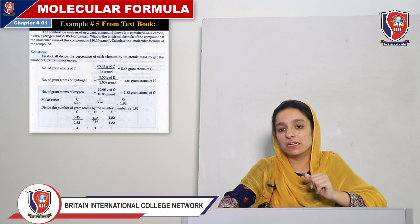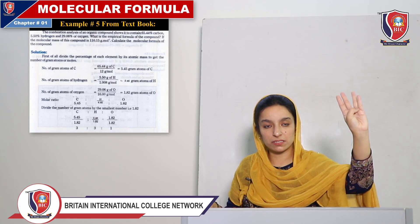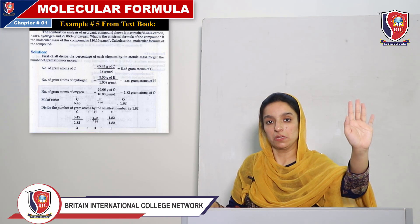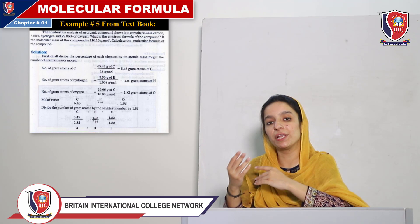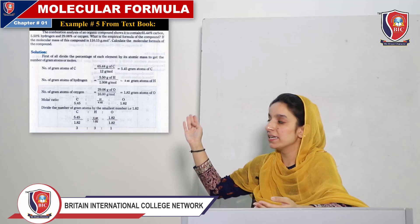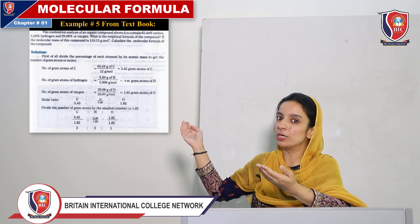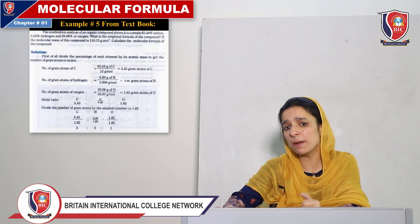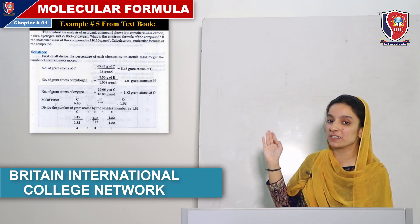Now there is an example from the book linked to this. Previously we studied that there are 4 steps to find the empirical formula: percentage composition, gram atoms, atomic ratio, then formula. We applied combustion analysis to derive the empirical formula. Now the problem states: the combustion analysis of an organic compound shows it contains 65.44% carbon, 5.50% hydrogen, and 29.06% oxygen. Find the empirical formula.